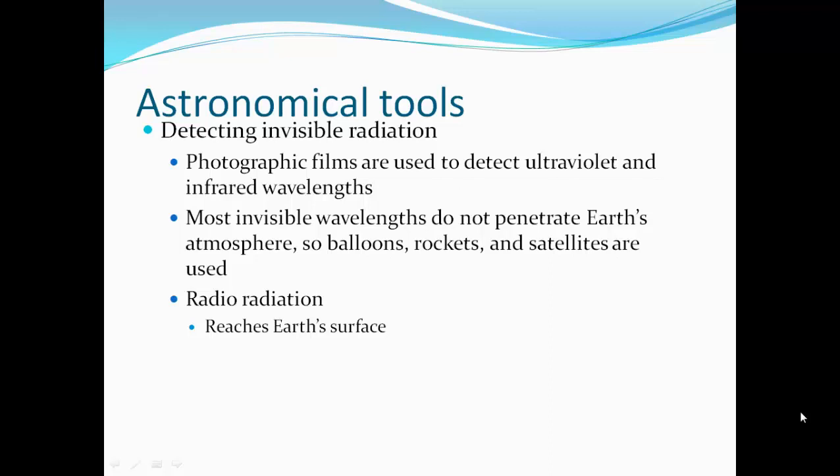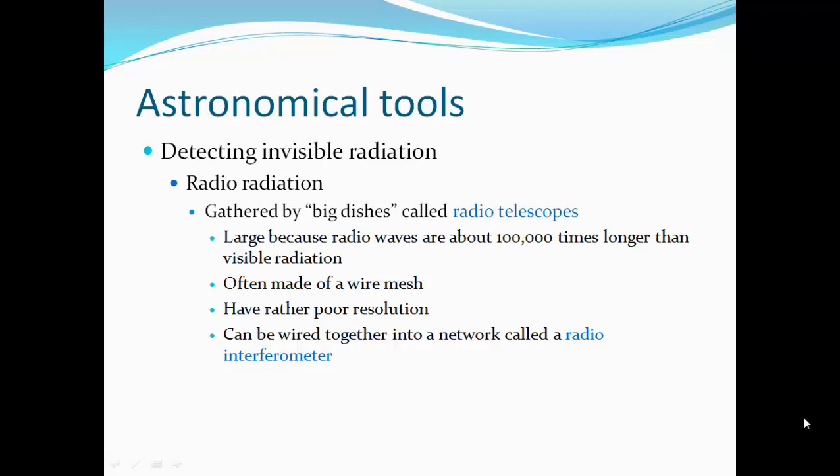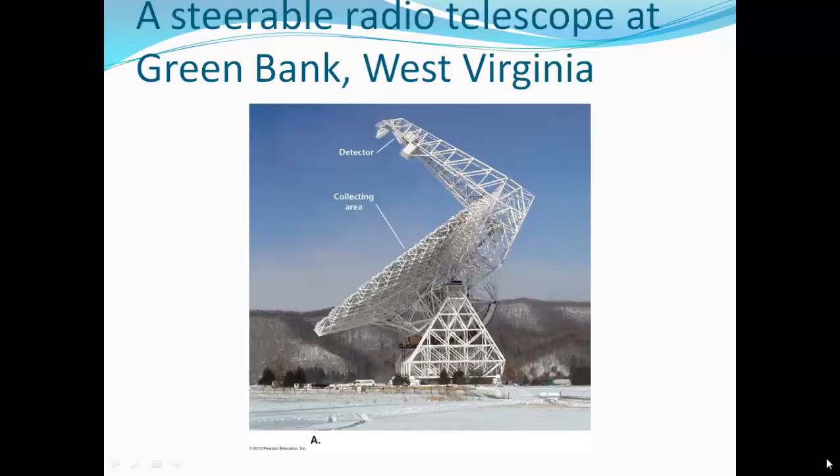Radio radiation does reach the Earth's surface, so we use radio telescopes. Radio telescopes are big dish telescopes. They're very large—radio waves are about 100,000 times longer than visible radiation, so you need a very big dish. They're often made of wire mesh. They have rather poor resolution. They can be wired together into a network to create a radio interferometer. Here's a picture of a big dish radio telescope. The collecting area is collecting those radio waves.